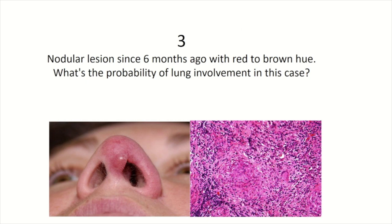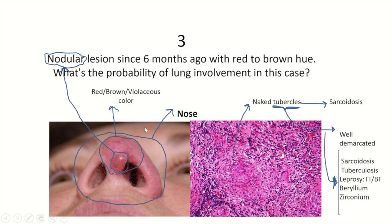Question three: nodular lesions since six months ago with a red to brown hue. What's the probability of lung involvement in this case? As you see here, a violaceous nodule is located on the nose since six months ago. On histopathology, granuloma formation is found with well-demarcated borders and sparse infiltration of lymphocytes — indicative of sarcoidosis.